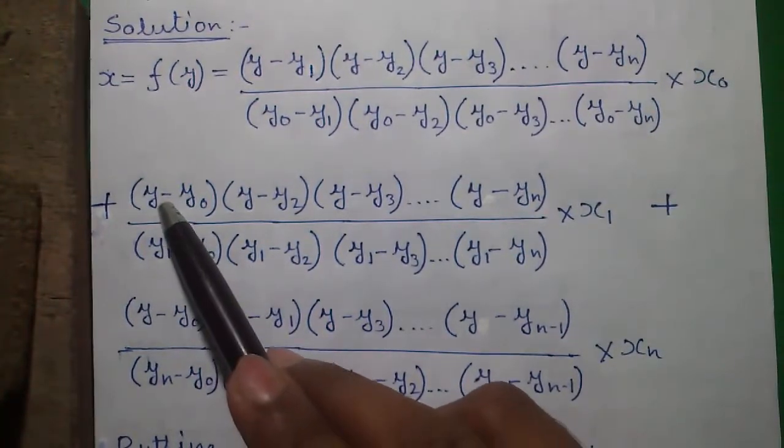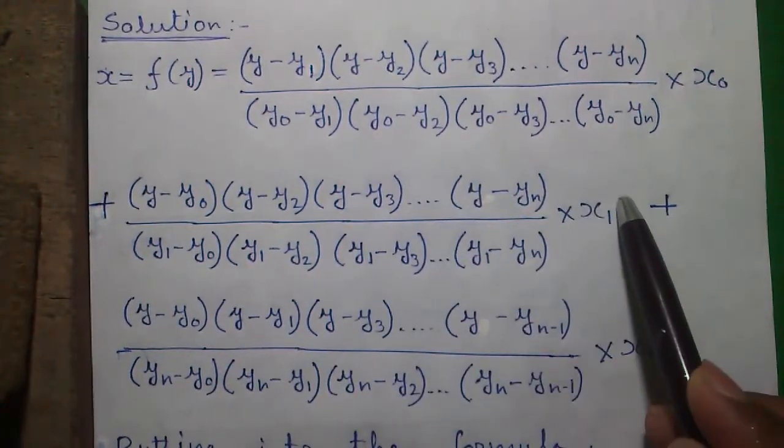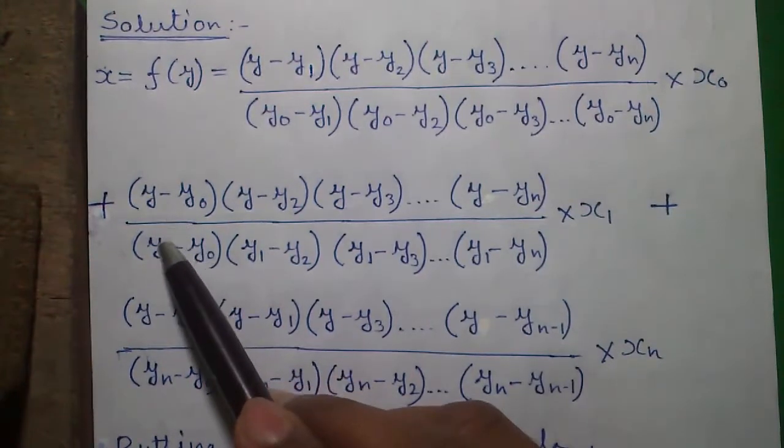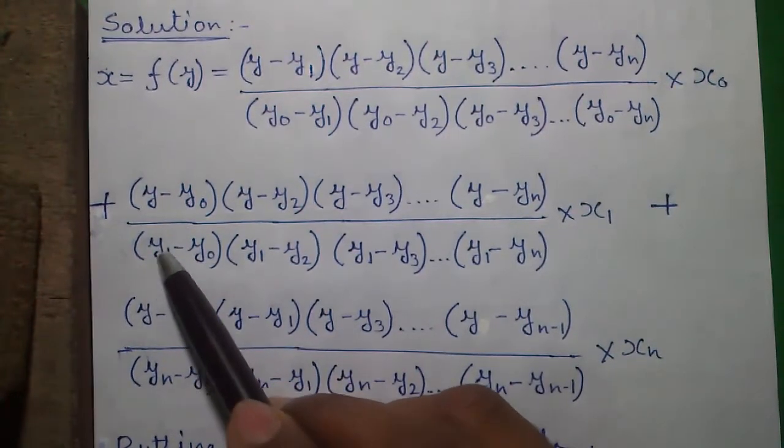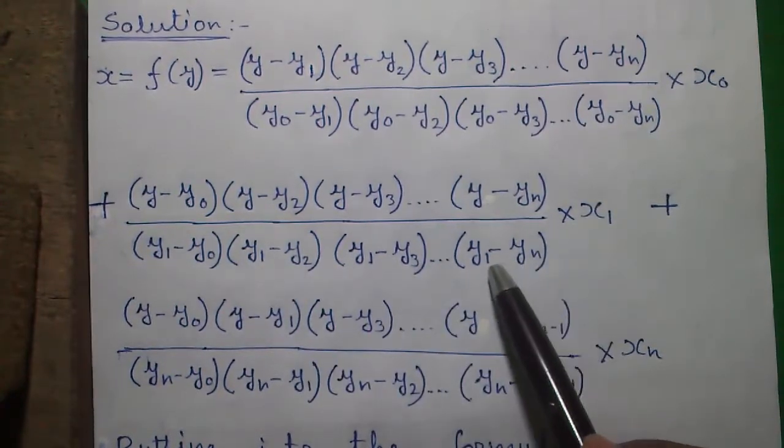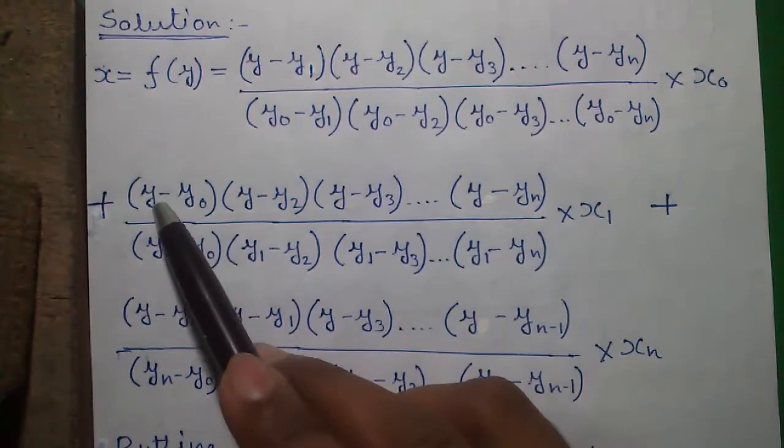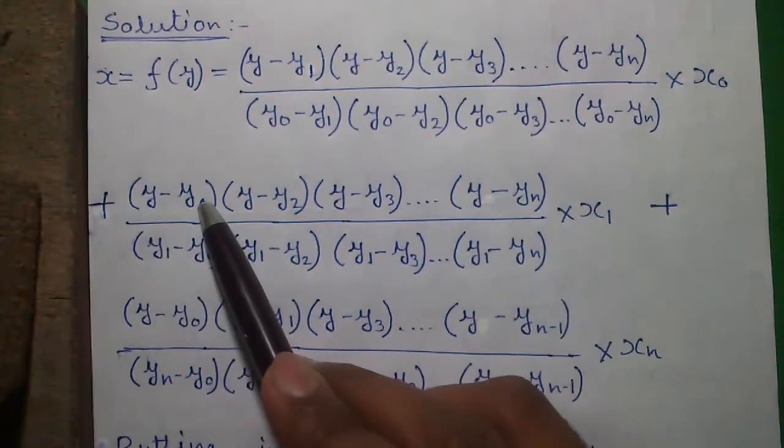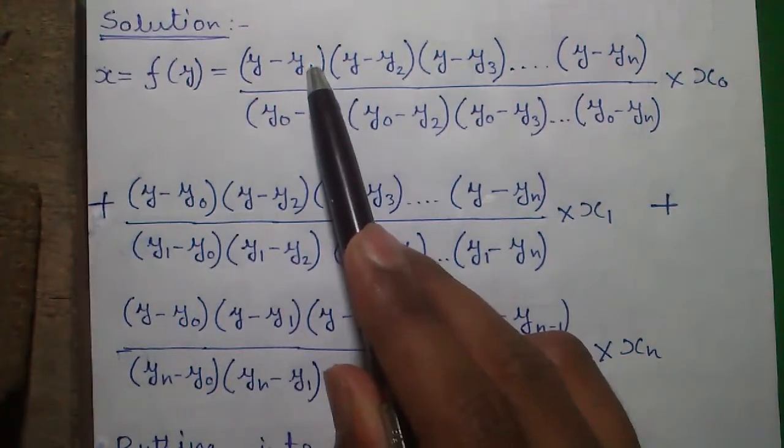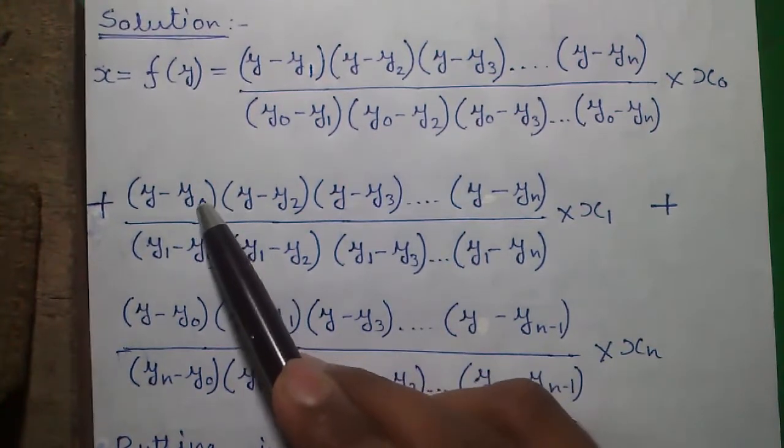Similarly, in the next term, the y1 term, we will deal with x1 and y1 and we will subtract everything from y1. So y1 minus y0, y1 minus y2, y1 minus y3 and so on up to y1 minus yn. And in the numerator we won't subtract y1. Here we did not subtract y0, we started with y1.